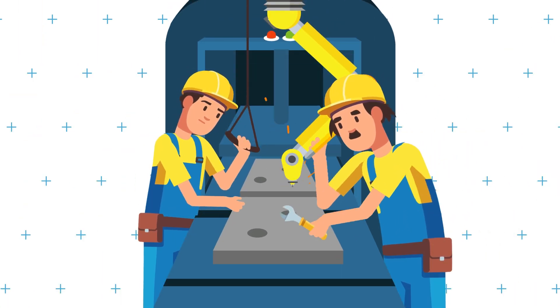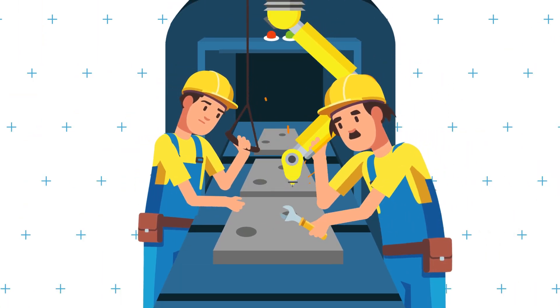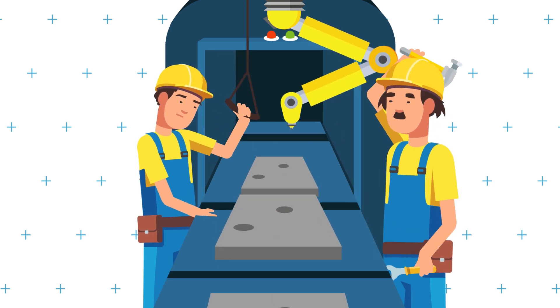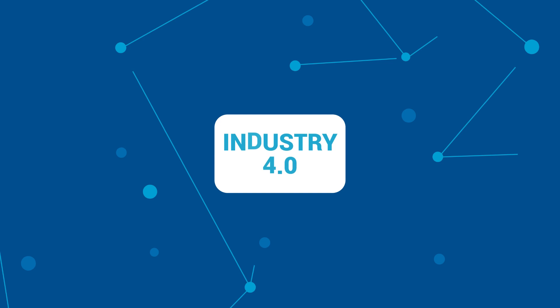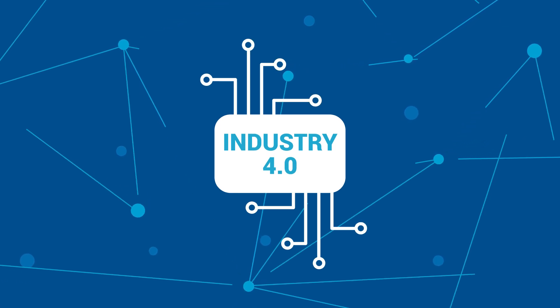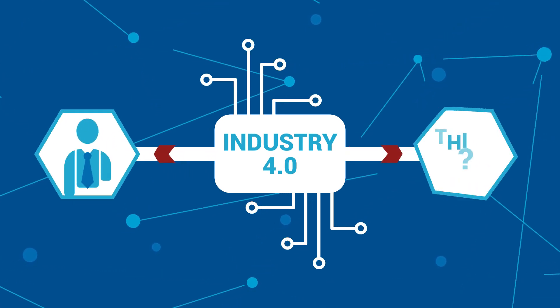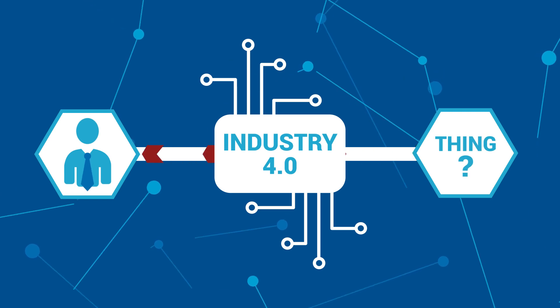In traditional production systems, computers are used as standalone devices to perform specific tasks, like machine automations. In contrast to this, in Industry 4.0, production systems are designed as a network of interacting elements, people, and things. This interaction is provided by connectivity.